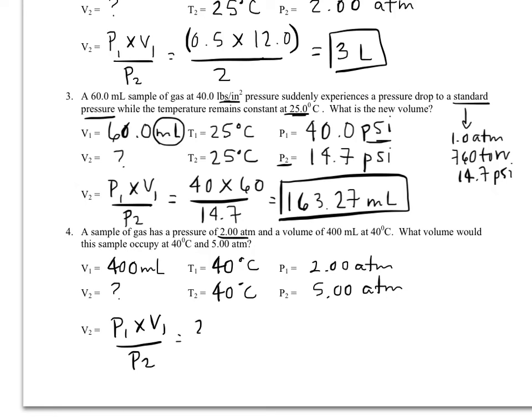So two times 400 divided by five gives us a hundred and sixty milliliters. So our pressure went up, our volume went down, and that is our final answer.